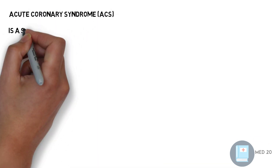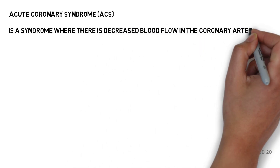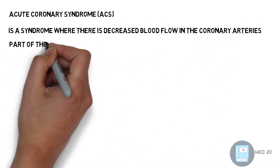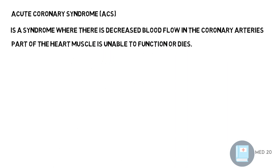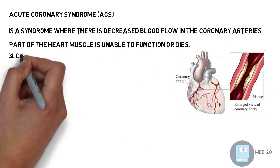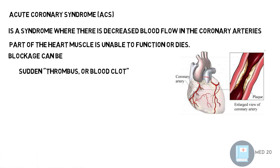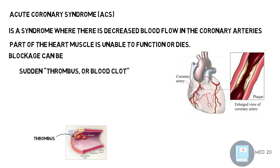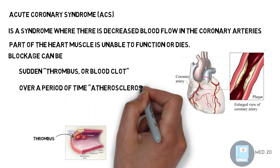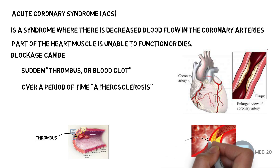Acute coronary syndrome is a syndrome where there is a decrease in the blood flow in the coronary arteries due to blockage. This leads to a part of the heart muscle being unable to function or dying. This blockage may be sudden, through thrombus or blood clot, or over a period of time through atherosclerosis, which is deposition of fatty tissue in the artery.